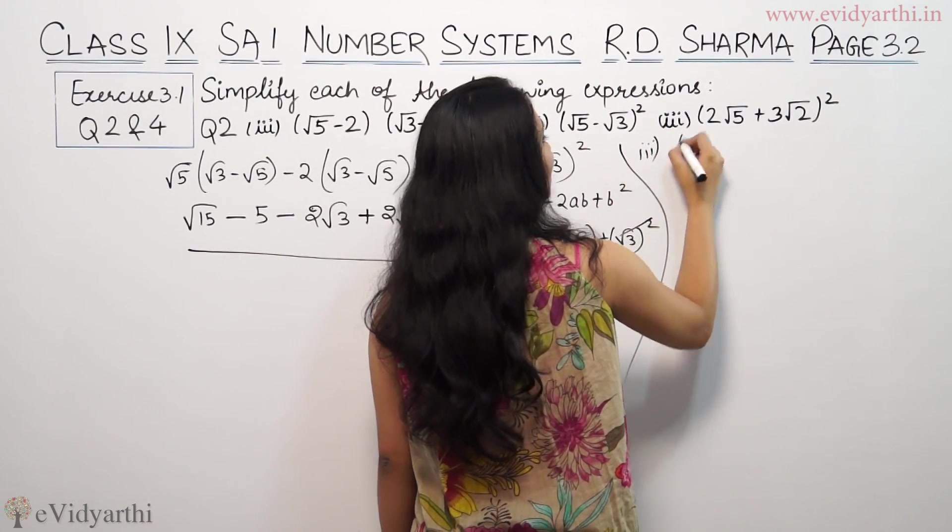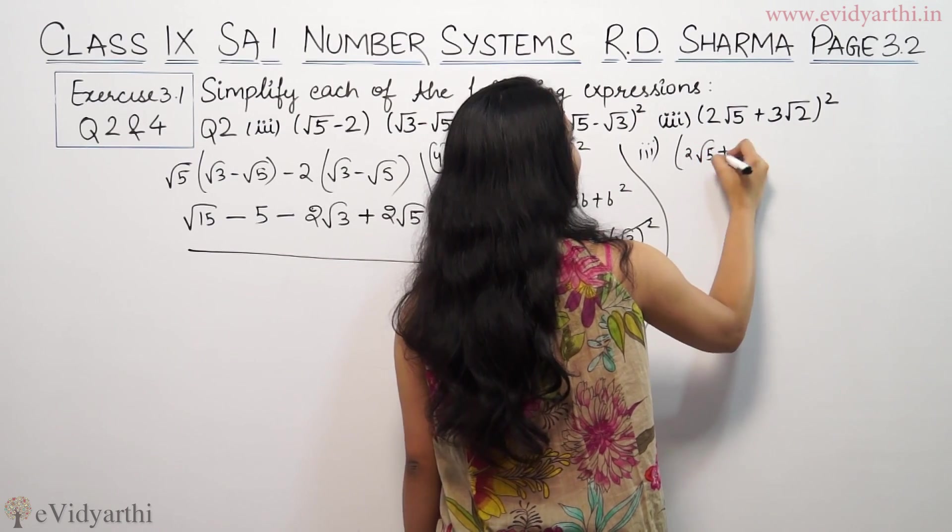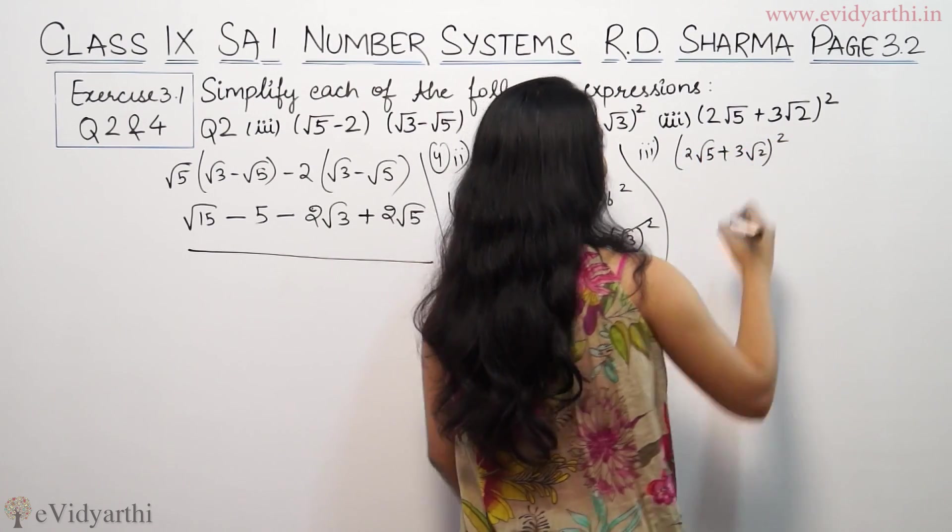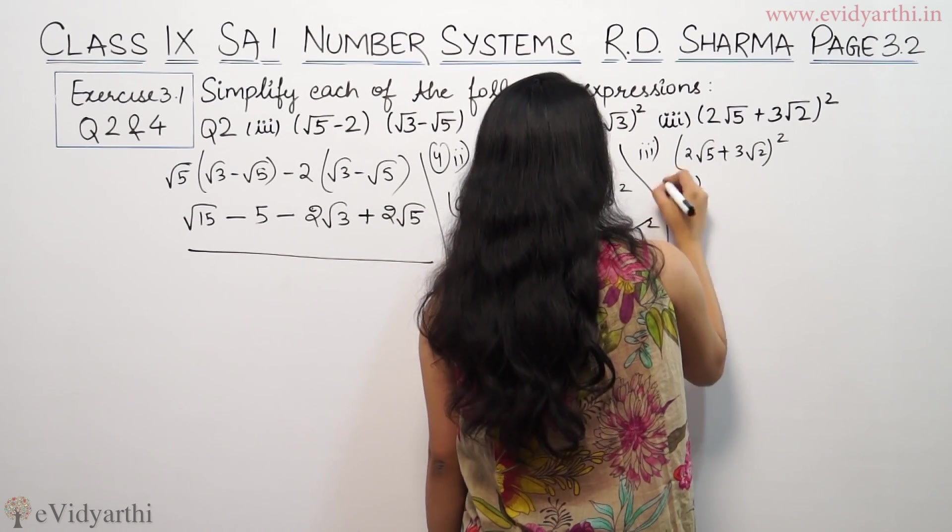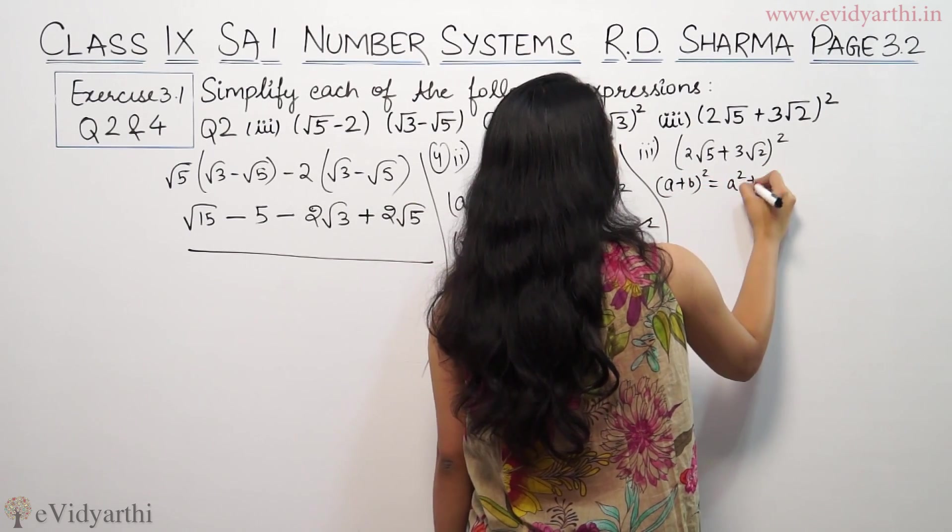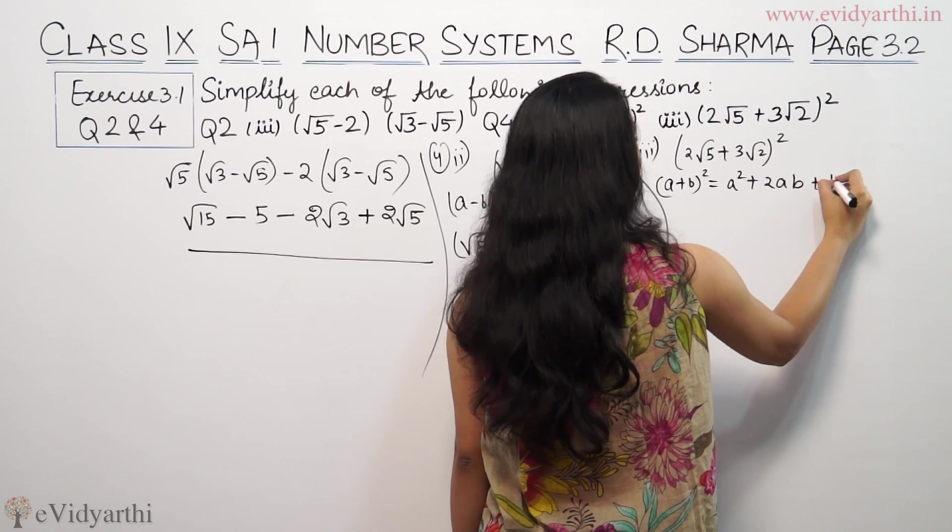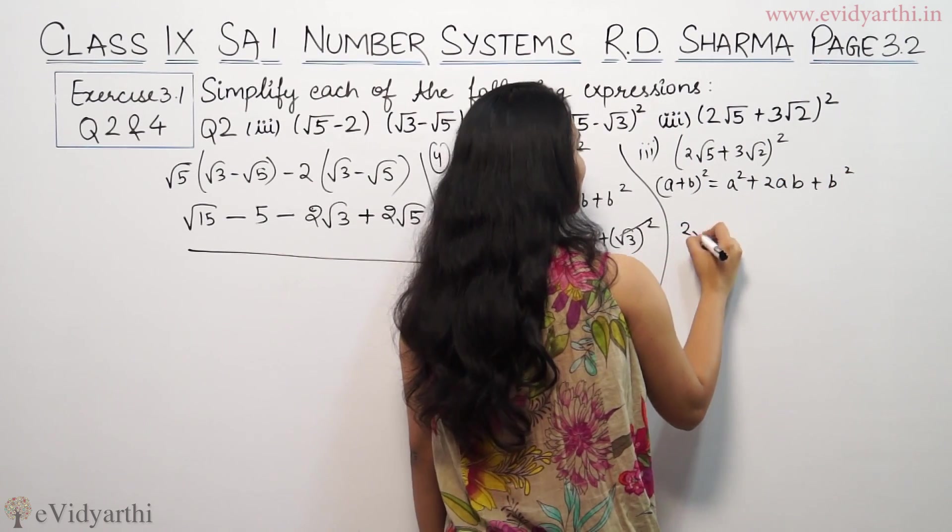Third problem is (2√5 + 3√2)². Again (a + b)² formula. So (a + b)² is a² + 2ab + b².